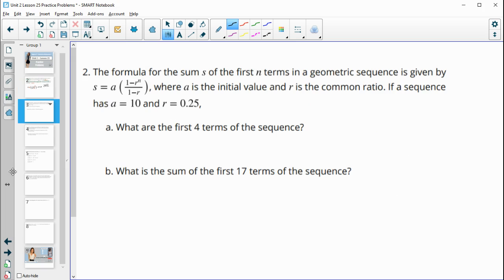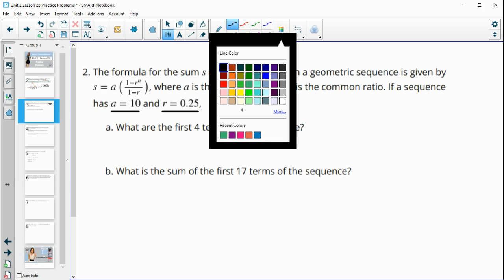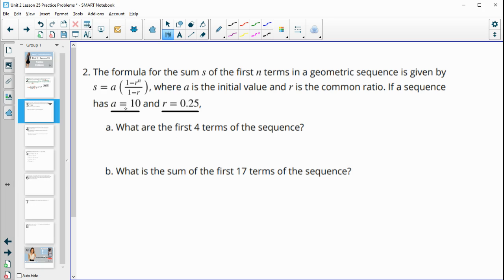Number two, we're going to use that same formula again, and then this time they're just giving us the a and the r to just work with instead of in a situation. So this one wants to know what are the first four terms. So our first one is the initial amount, 10.